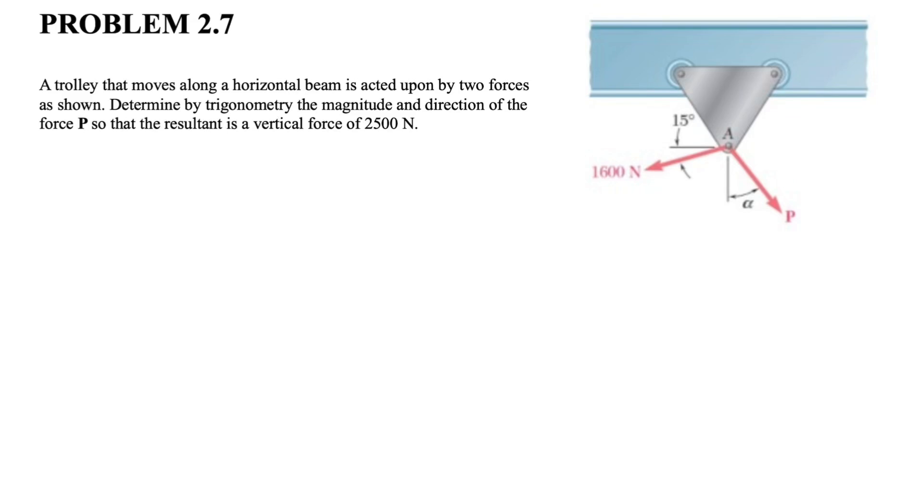Okay, welcome back guys. In today's video we're going to be solving another question from Chapter 2 in Johnson. We have this trolley that moves along a horizontal beam, and the beam is acted upon by two forces as we can see in the figure. We need to determine by trigonometry the magnitude and the direction of the force P.